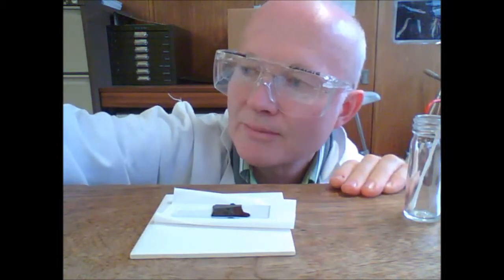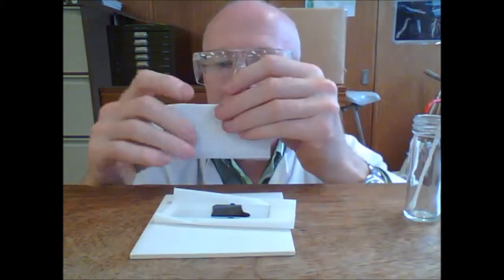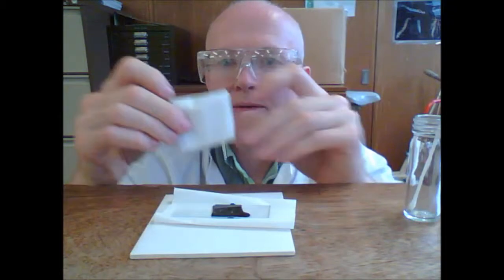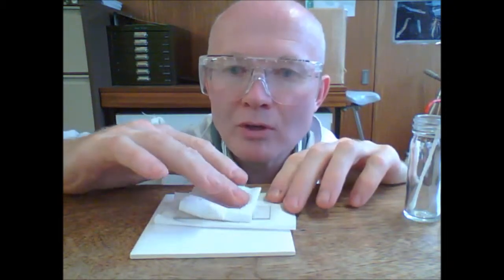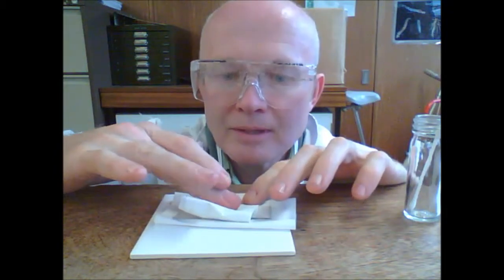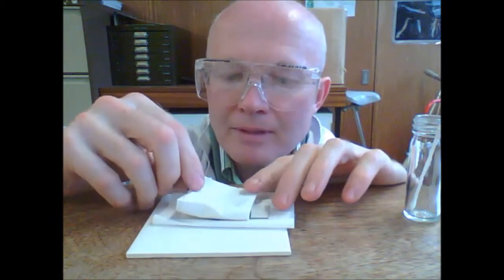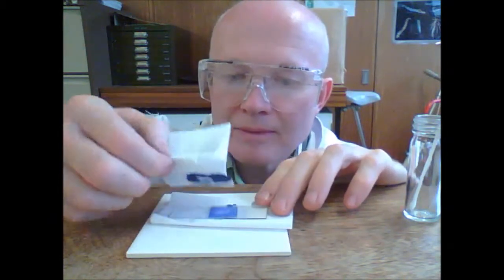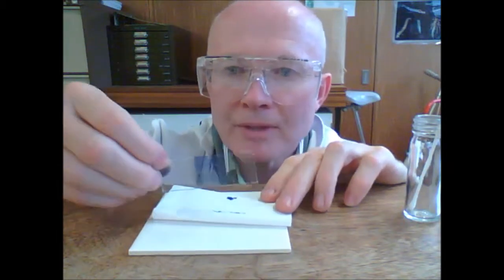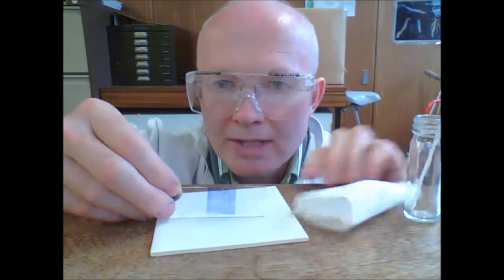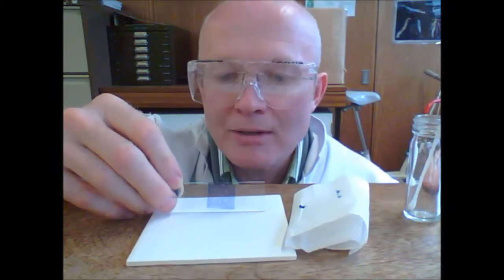Take another tissue, and you can fold that into fours, to quarters, and then blot from above. Don't be frightened, blot quite firmly, because you're looking for quite a thin layer of stain. So blot it firmly, put that in the bin, and then you've got a light blue stained slide ready for examination under the microscope.